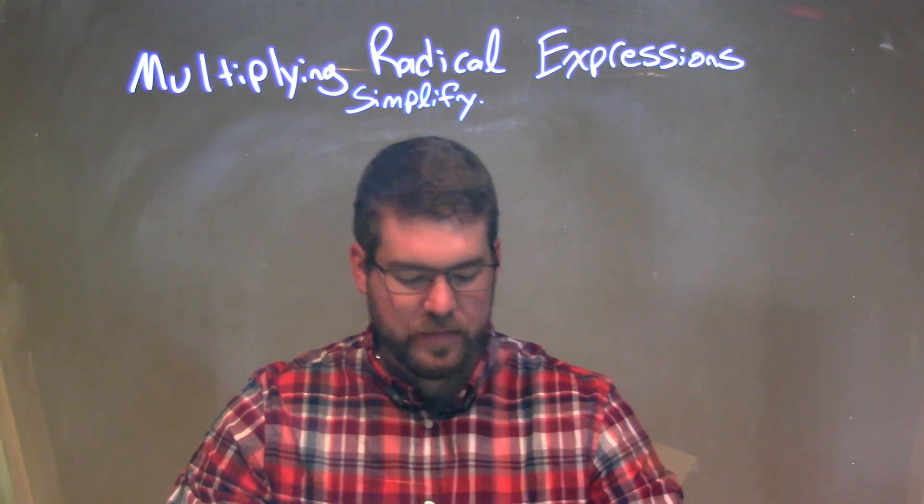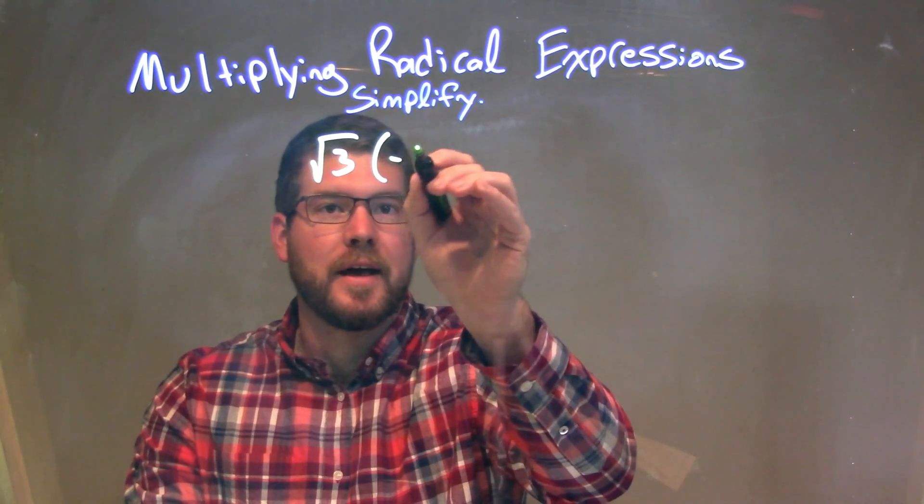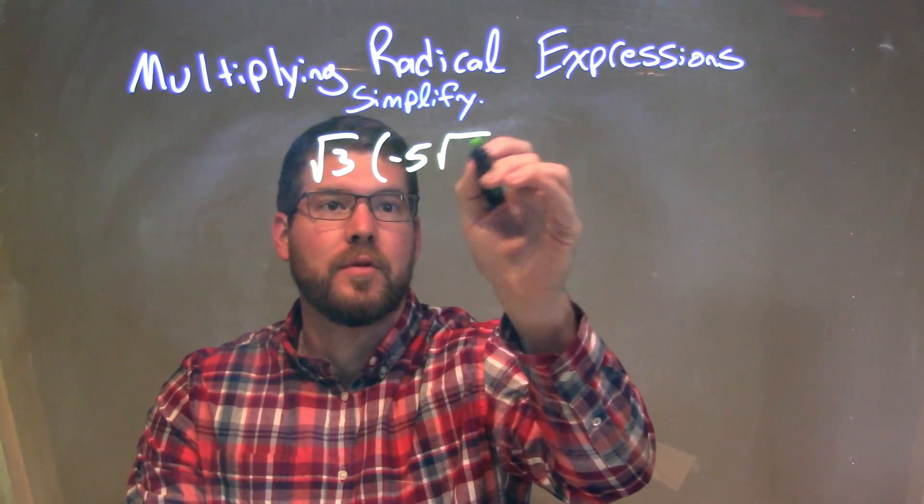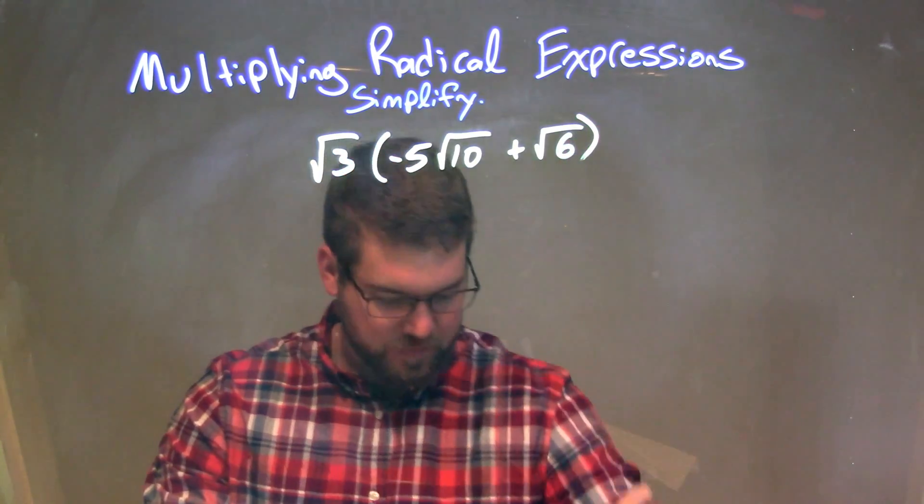So if I was given this expression, the square root of 3 times a negative 5 times the square root of 10 plus the square root of 6.